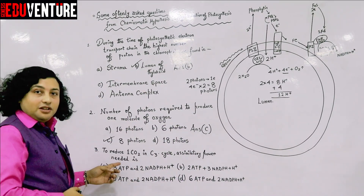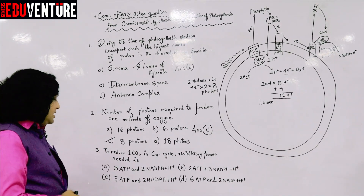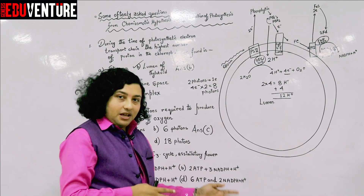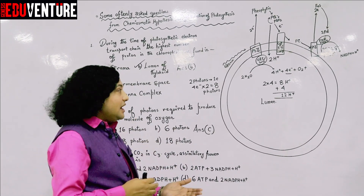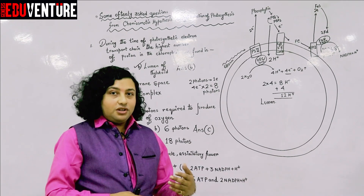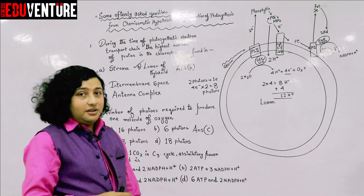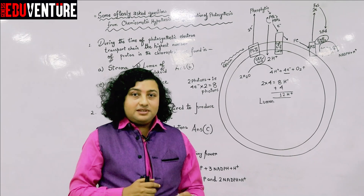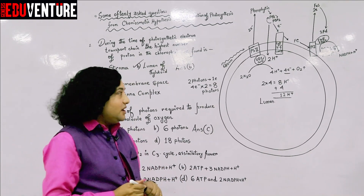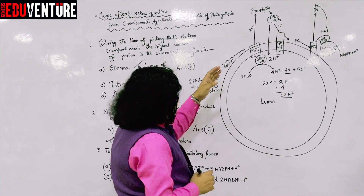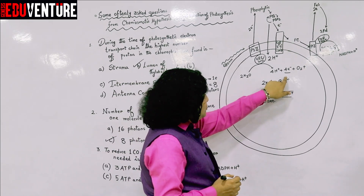Without NADPH and ATP produced from the light reaction, the dark reaction will not take place. We need to find out how many ATP and NADPH are required to fix one carbon out of the 6 carbons in glucose. Photolysis of two molecules of water produces four electrons.